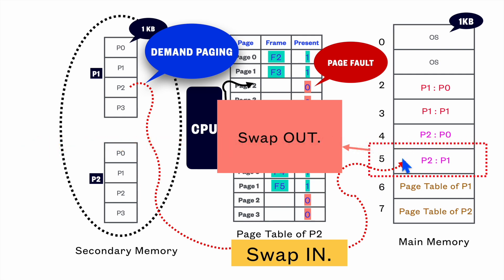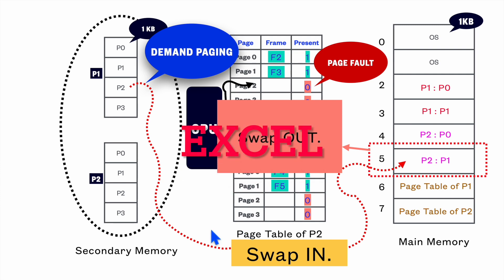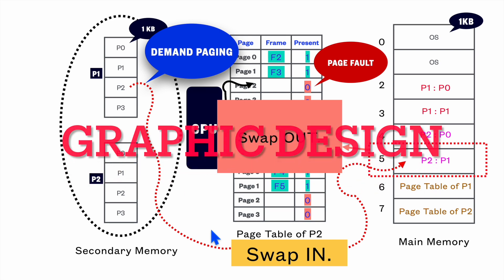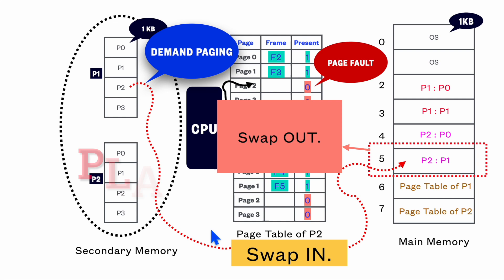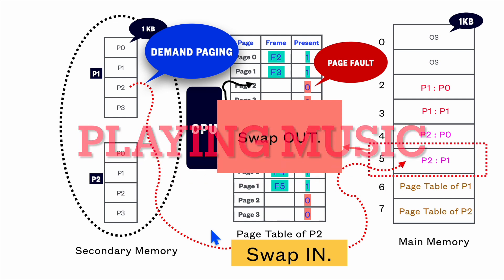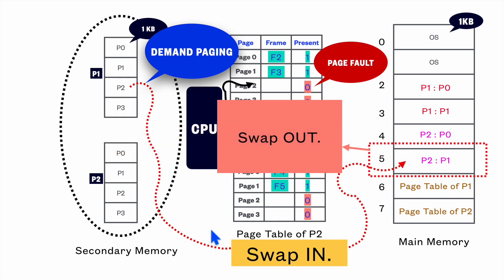Now think about a scenario where you have the maximum number of processes to be executed. For example, consider you have opened so many apps on your computer — you are working on Microsoft Excel, doing some graphic design on the side, playing music in the background, and running different other things at the same time.